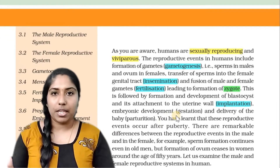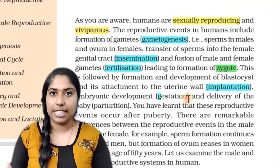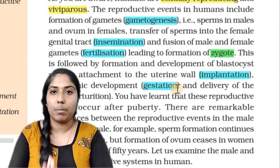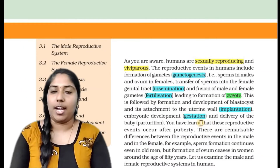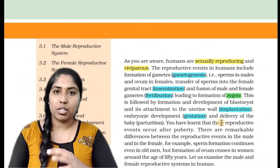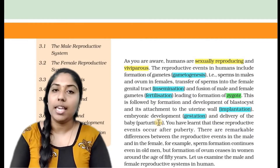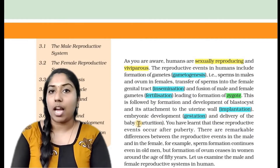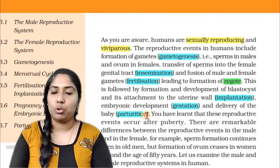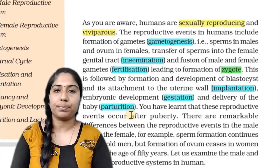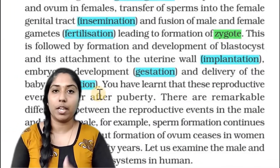That process is called implantation. Then the development stage is called gestation, during which the baby fully develops. When the baby comes out, this is called parturition. So this is the process of human reproduction.